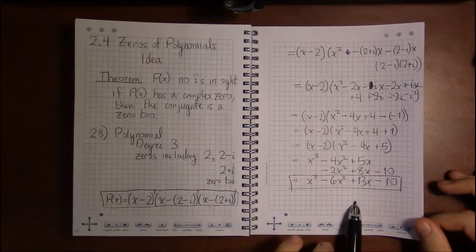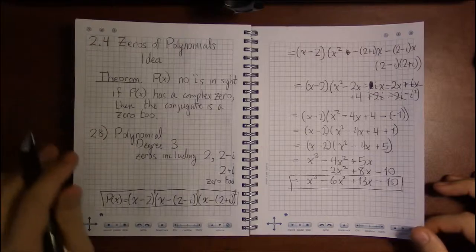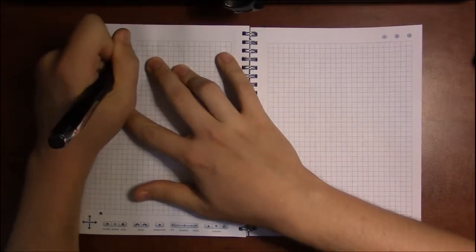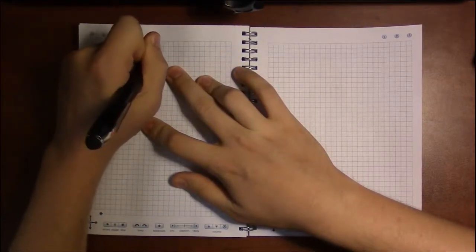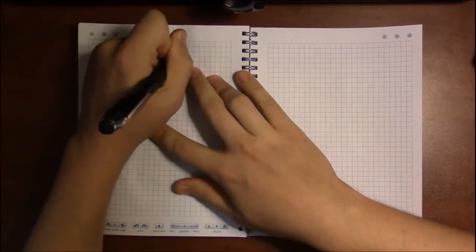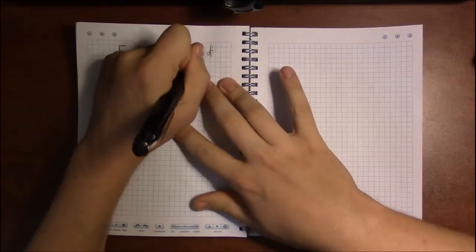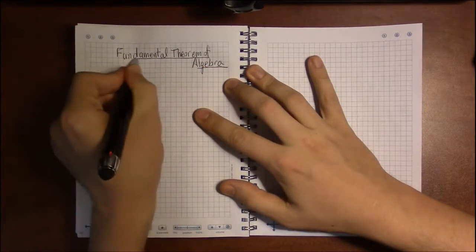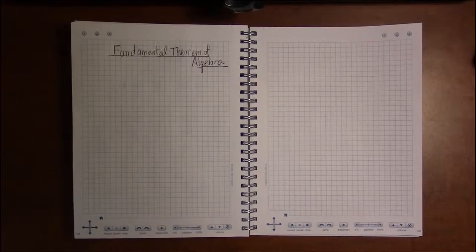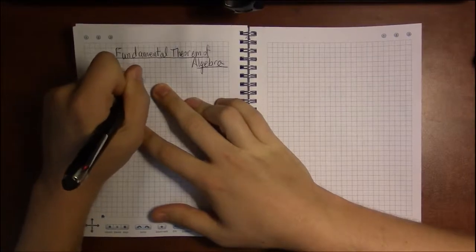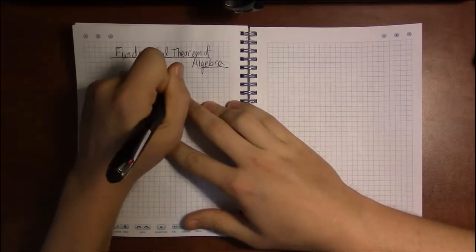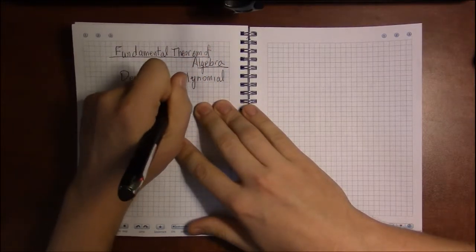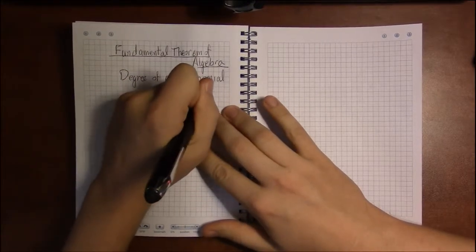So complex conjugates can get us through some of the examples and show us a nice coincidence, a nice relationship that happens in polynomials. The other thing, the kind of crowning jewel if you will of college algebra, is the Fundamental Theorem of Algebra. And you can state the Fundamental Theorem in a number of ways, but I'm going to state it in the way that I was stating it in the previous video, namely that the degree of the polynomial is the number of zeros of the polynomial.